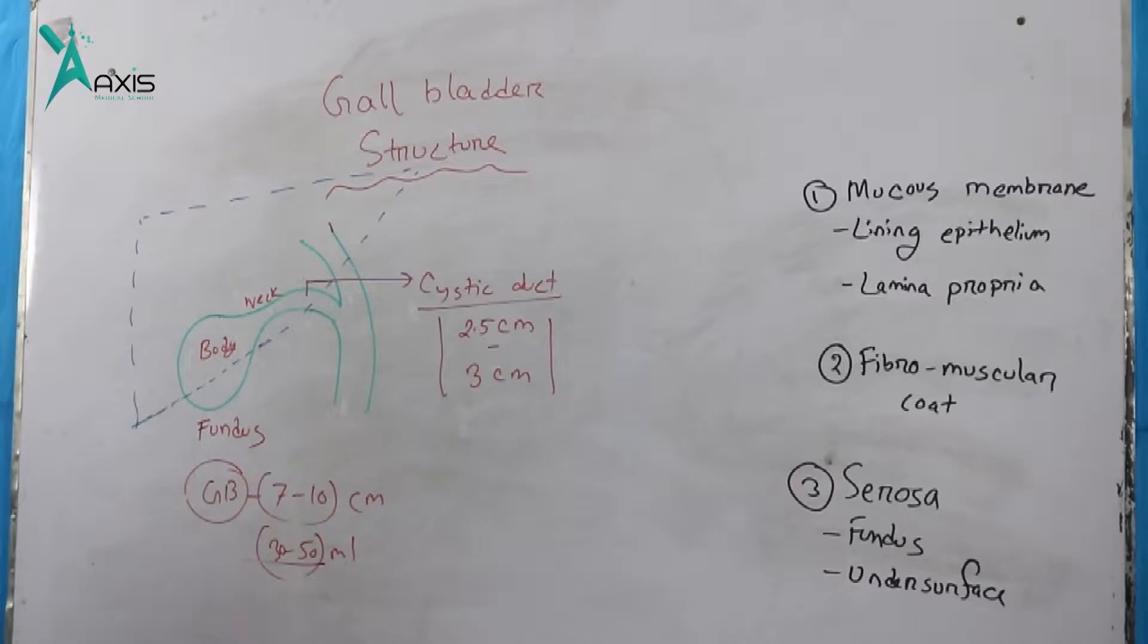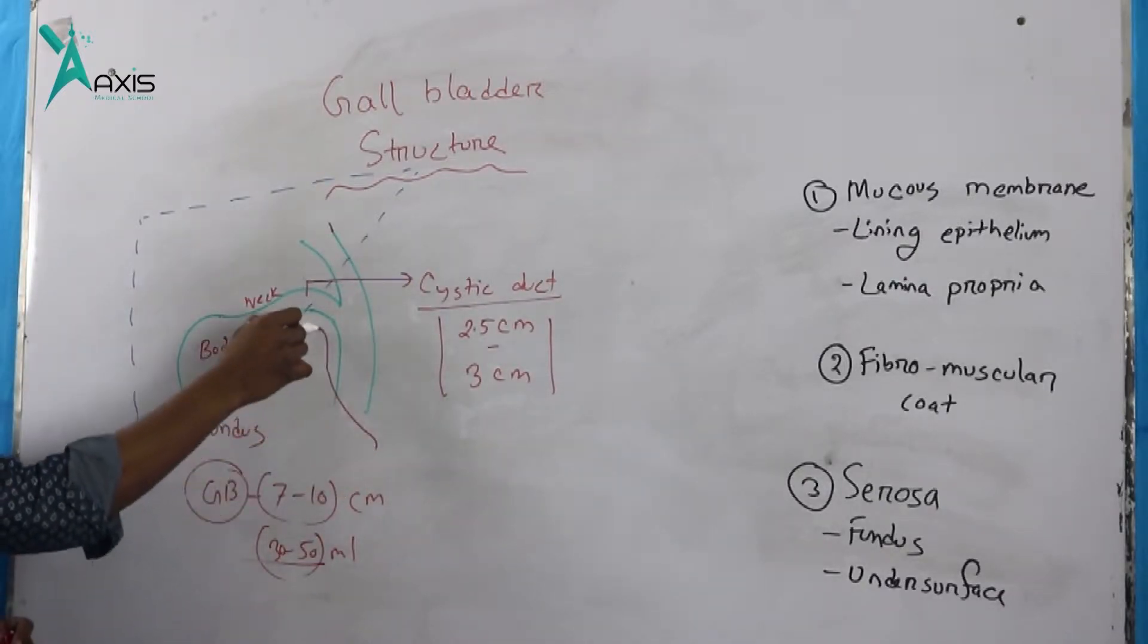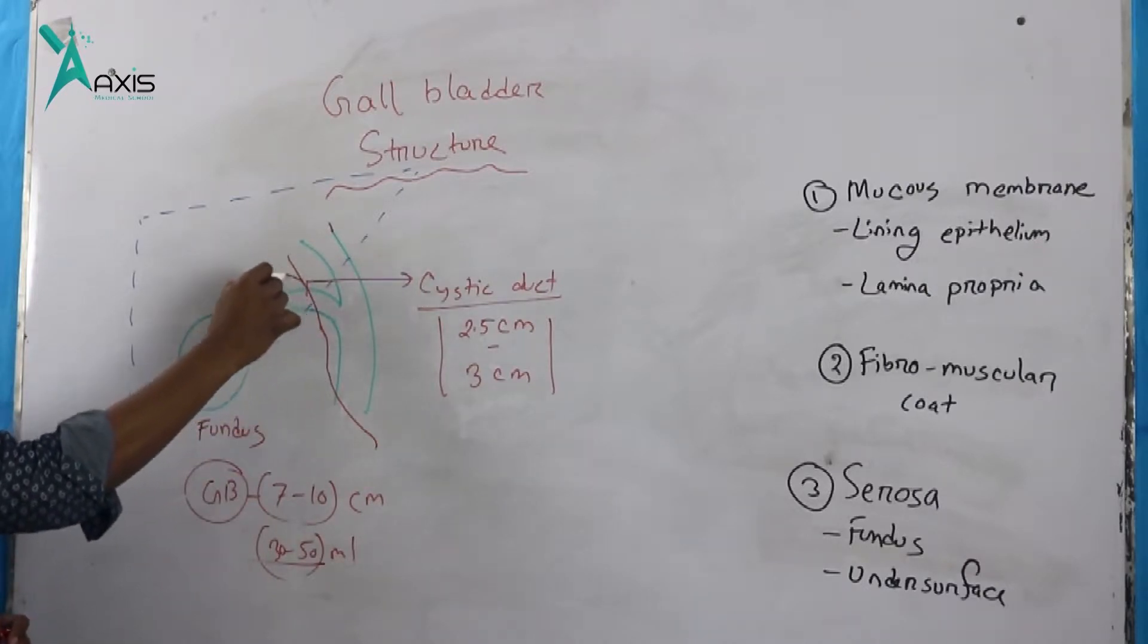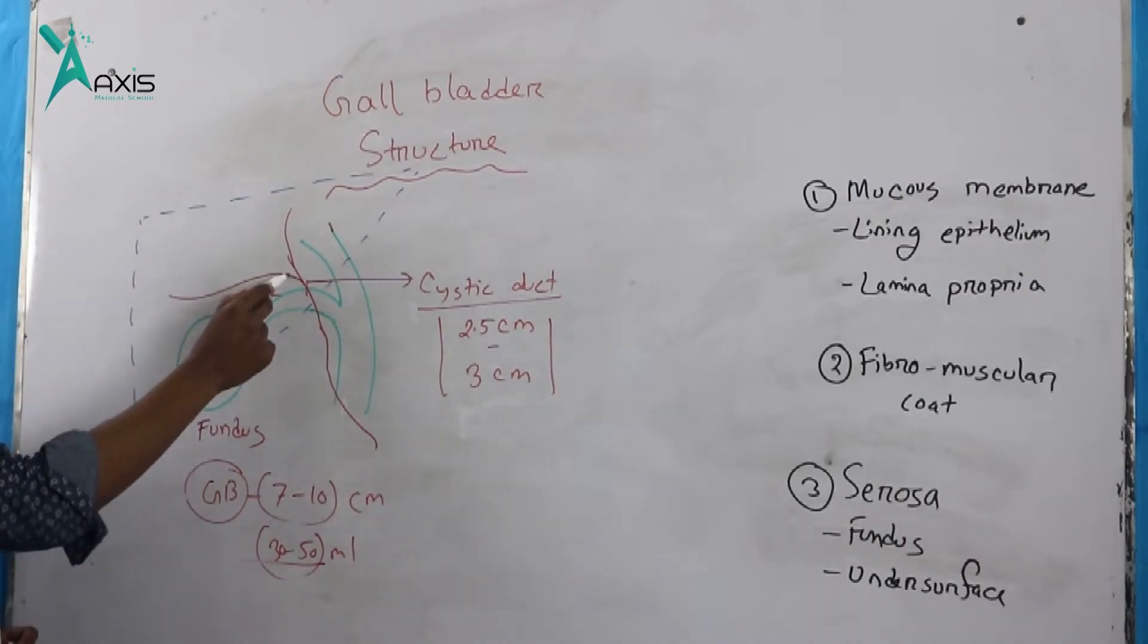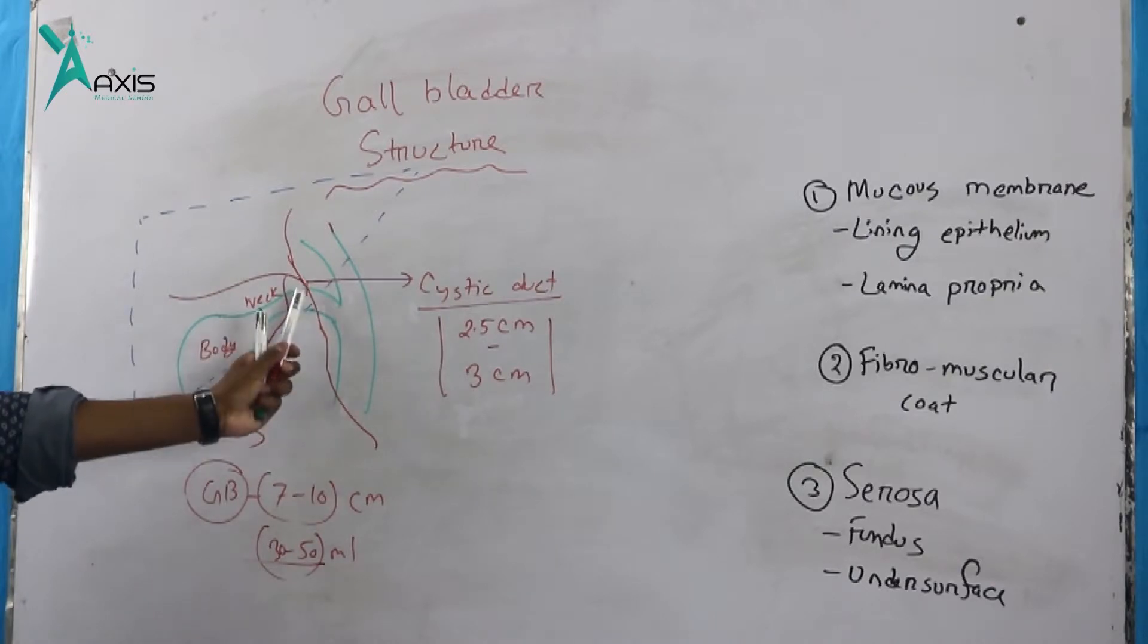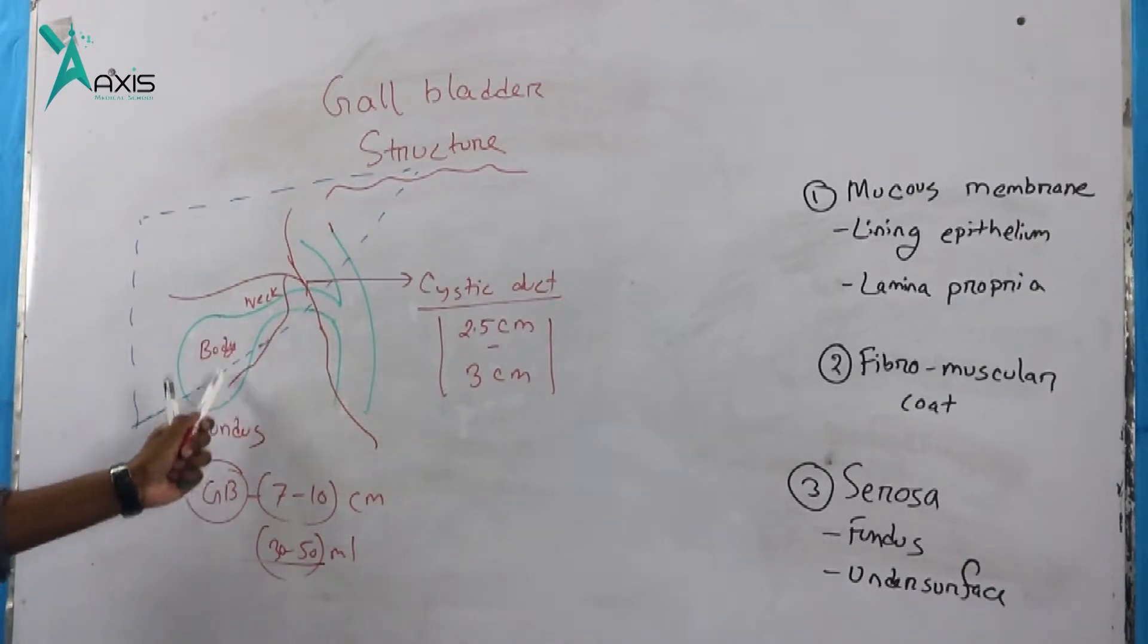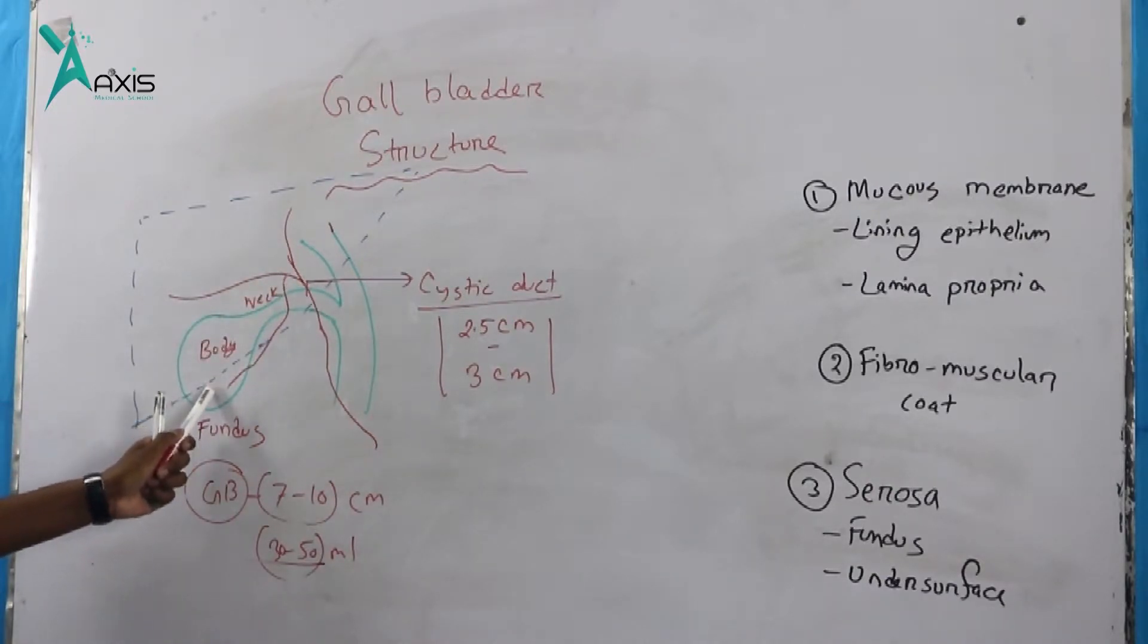The gallbladder blood supply comes from the hepatic artery. The hepatic artery has right and left branches. The cystic artery is a branch of the right hepatic artery that supplies the gallbladder.